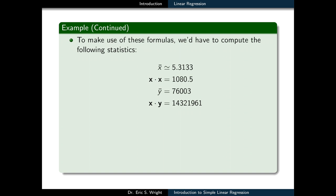Well, if we were to complete those computations, then we'd find that the mean of x is 5.3133 approximately. The dot product of x with itself is 1,080 and a half. The mean of y would be 76,003, and the dot product of x with y would be 14,321,961. We would then substitute those values into our weight formulas for w0 and w1, and we would find that those weights are about 25,792.2 and 9,449.96 respectively.